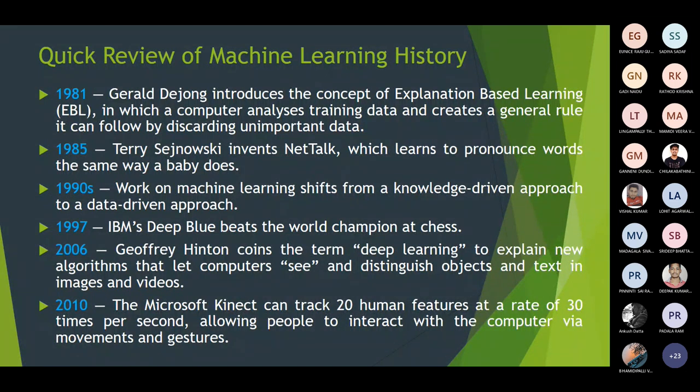In the year 1997, IBM's Deep Blue beat the world champion at chess. This is the autonomous machine learning system which beat the world champion at chess.